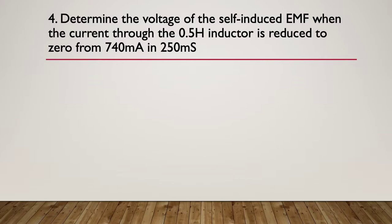Four: determine the voltage of the self-induced EMF when the current through the 0.5 henry inductor is reduced to zero from 740 milliamps in 250 milliseconds, or a quarter of a second. So pause here while you think about the formula you'll need.